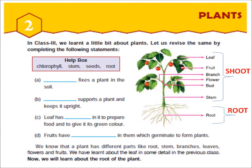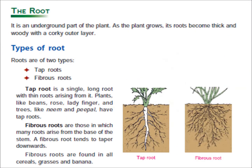The root. The root is that part of the plant which remains under the ground. The roots have many tiny thin hair-like branches. They fix the plant firmly in the soil. As the plant grows, it becomes thick and woody with a bark-like layer. Root is an important part of the plant — it supports the plant and also takes water and minerals from the soil. Minerals are nutrients which are very important for the growth of the plant.